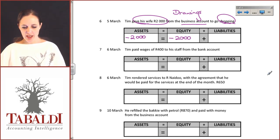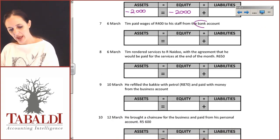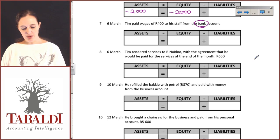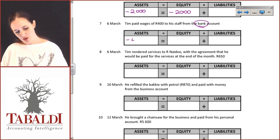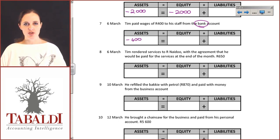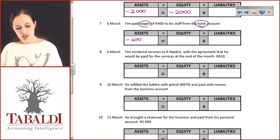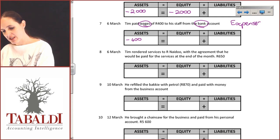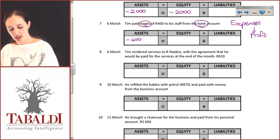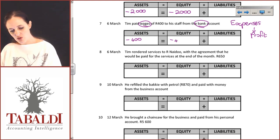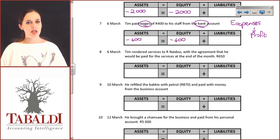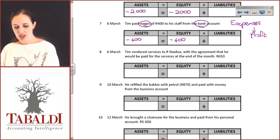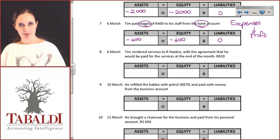Tim paid wages of 400 Rand to his staff from the bank account. We watch the bank account first because it's easier, and in terms of our assets we are reducing the bank account by 400 Rand. Wages are expenses you have to pay out on a weekly basis, and therefore we know that our expenses affect our profit, and our profit is going to impact our equity. So he is reducing equity by 400 and our equation is back in balance.